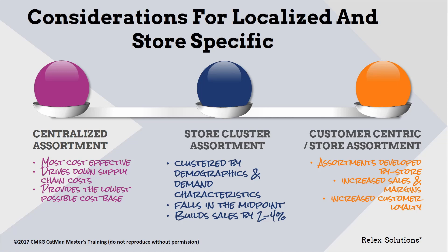The first step towards intelligent differentiation is clustering stores based on the similarities between the demand characteristics experienced by each, grouping stores based on how customers want to shop in them. This makes it possible to build assortments that fit each store very well, but by applying them to larger groups of stores with similar profiles, it allows some of the efficiencies of scale associated with central assortment.